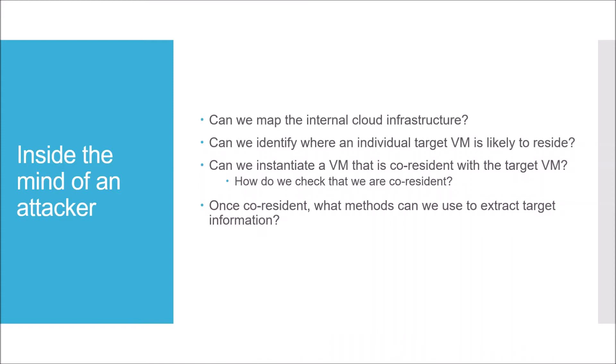For this presentation, we'll get inside the mind of the attacker. The primary questions are: can we map out the internal cloud infrastructure using cloud cartography? If so, can we identify where an individual target VM is likely to reside? Can we then instantiate a VM that's co-resident with that target VM? How do we check for co-residency? And finally, if we're co-resident, what methods can we use to extract target information?